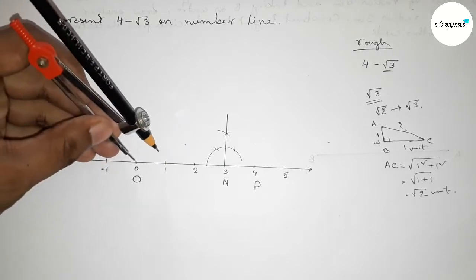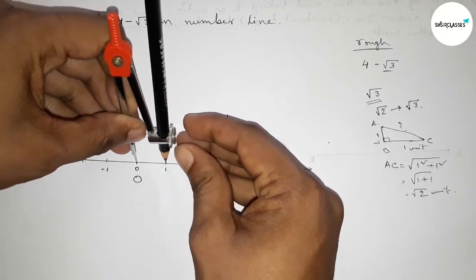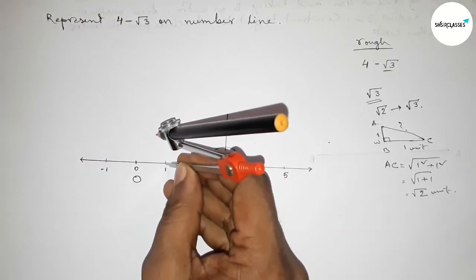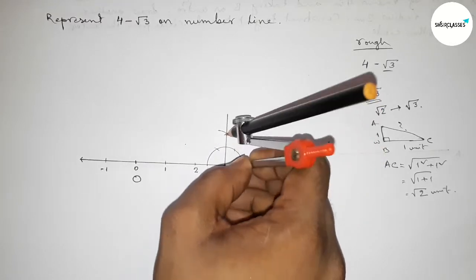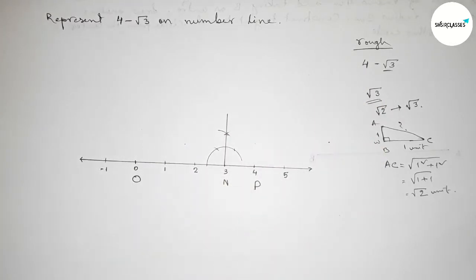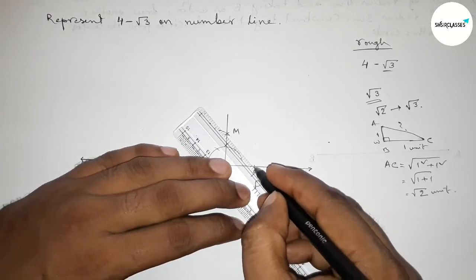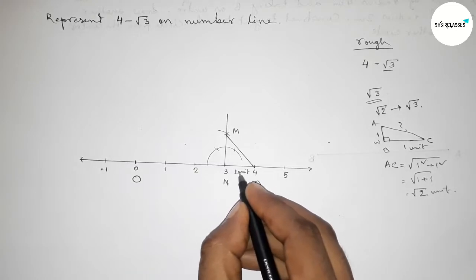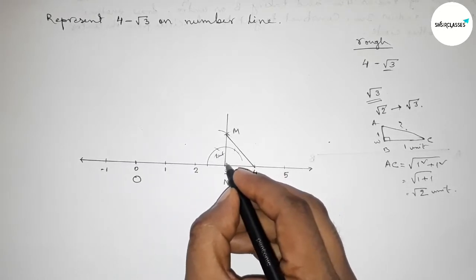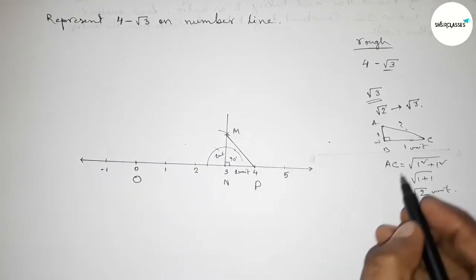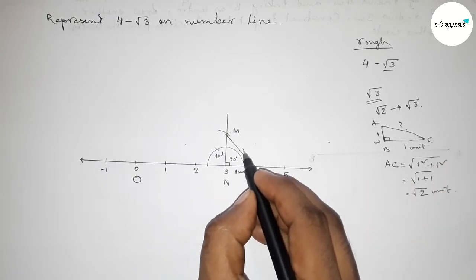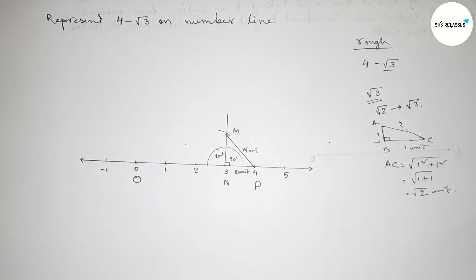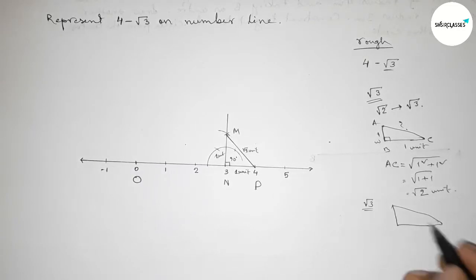Taking one unit length — the distance between 0 to 1 — and putting the compass here and cutting to mark point M. Now joining M and P. This side is one unit length and this side is one unit length, with a 90 degree angle between them, so MP equals root 2 units.